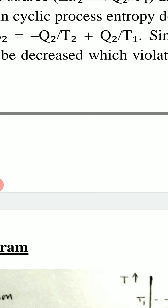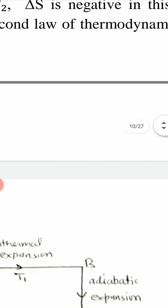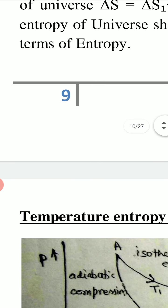A negative change in entropy means entropy of the universe is decreasing, which violates the second law of thermodynamics in terms of entropy. So if the Clausius statement is wrong, it also violates the entropy statement of the second law. We therefore see that both the Kelvin–Planck statement and the Clausius statement are inherent in the second law of thermodynamics stated in terms of entropy.